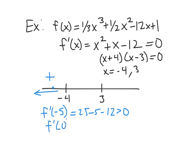f prime of zero is always easy to plug in for something between negative 4 and 3. And so we plug in 0, we get negative 12, which is less than 0.